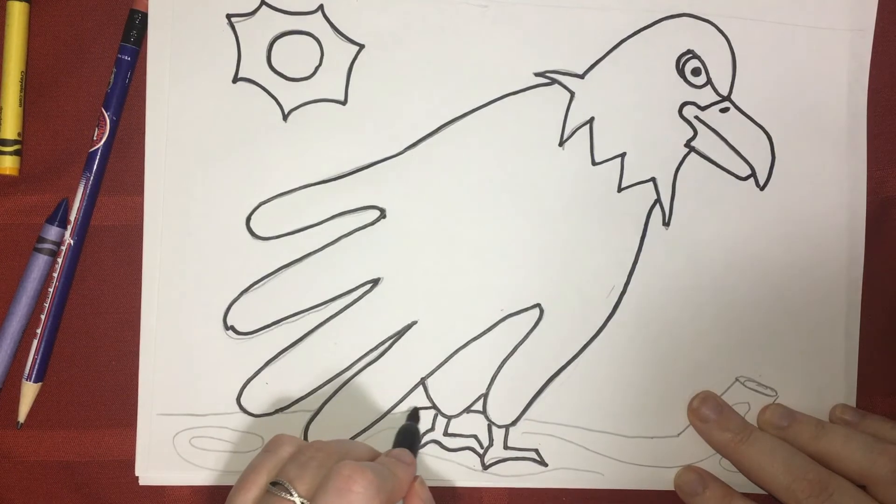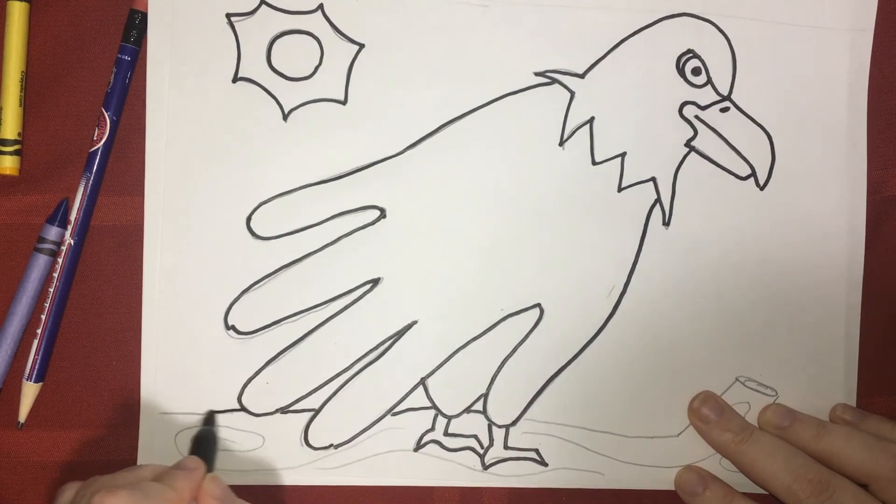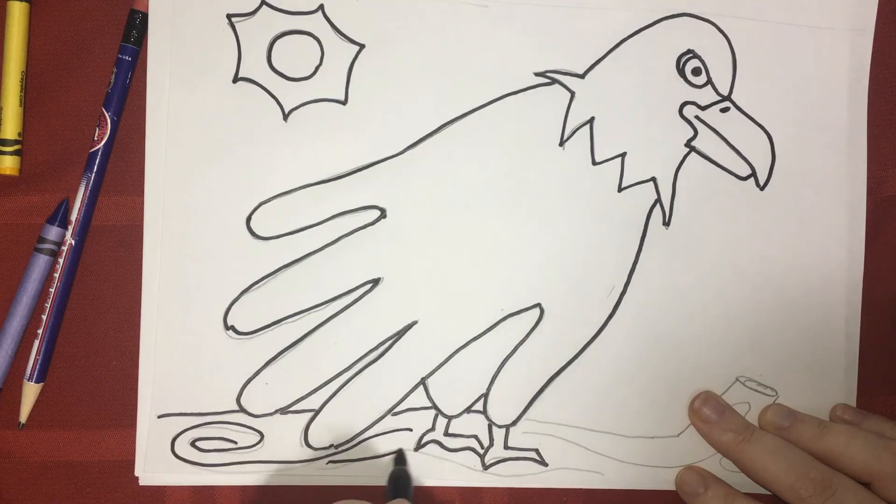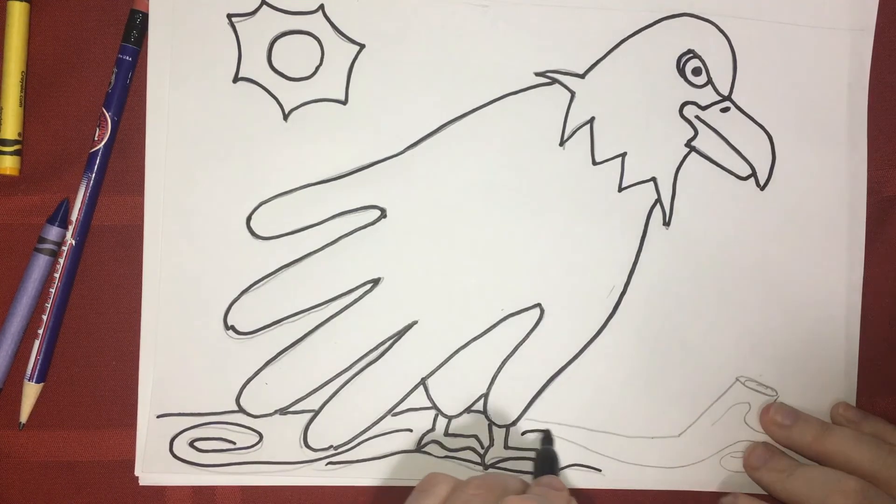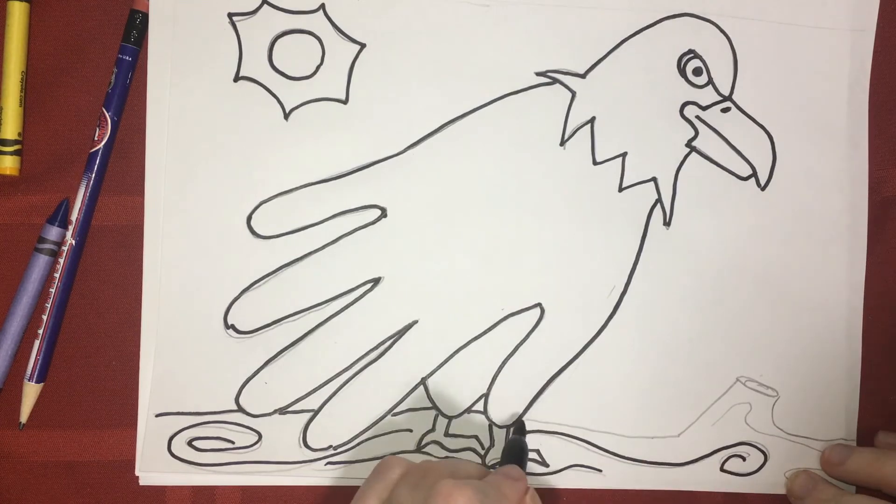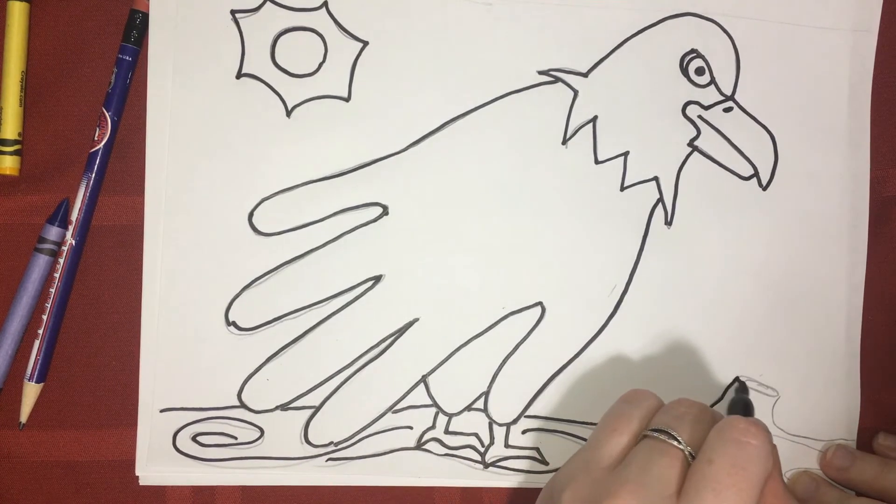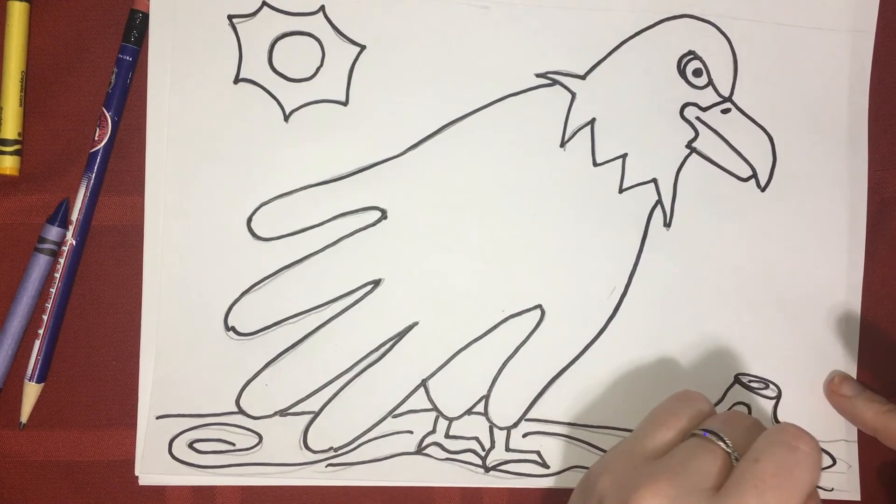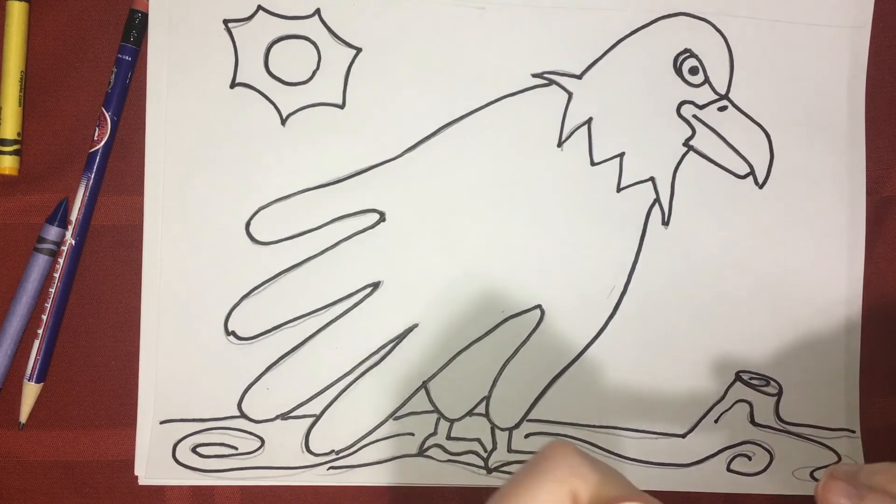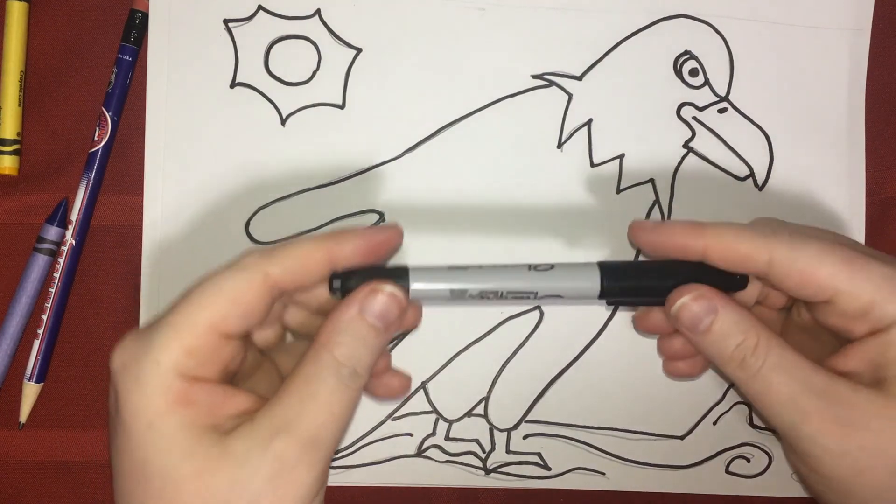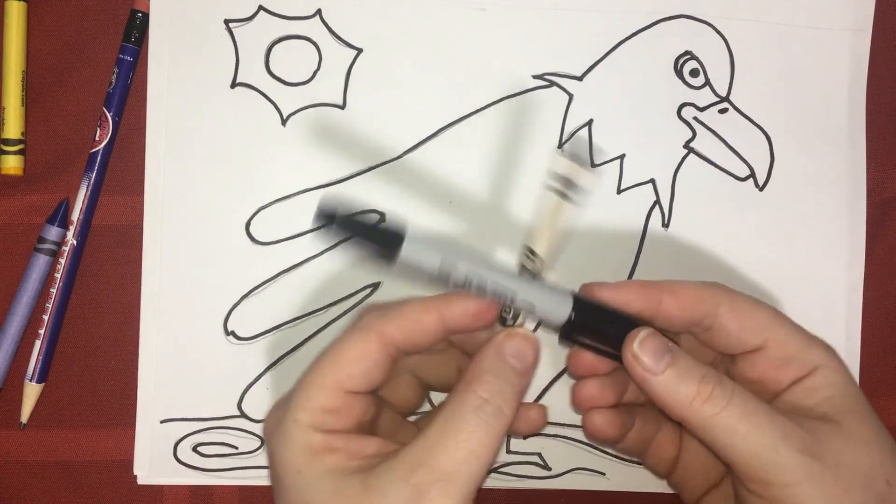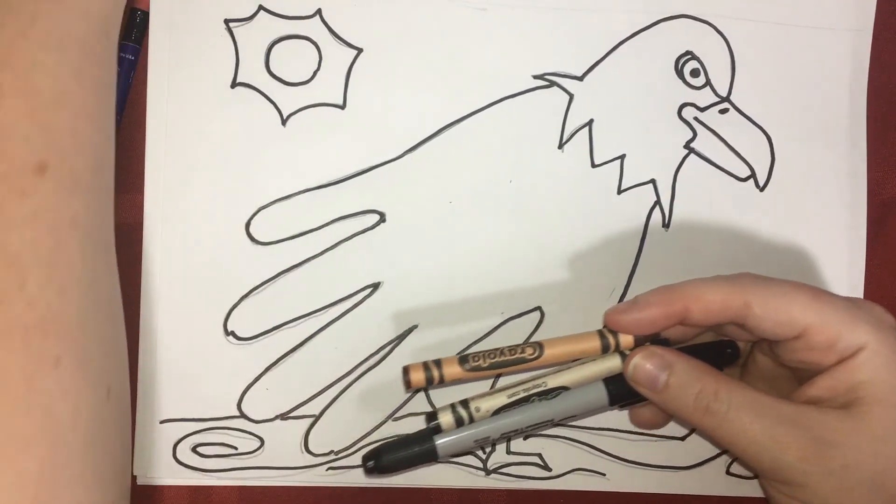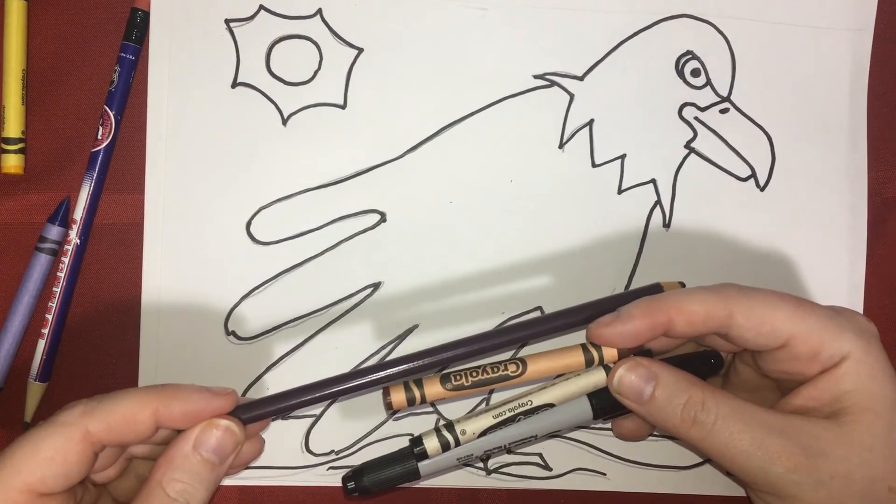Now, I'm going to finish part of my background. Once I finish my background, I'm going to show you some materials you can use if you don't have a black Sharpie. You can use any black marker, a black crayon, a darker colored crayon if you don't have a black, or you can even use a dark colored pencil. Any of these options would work for you.